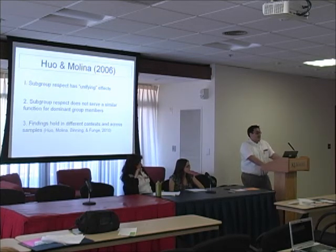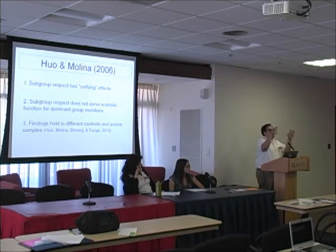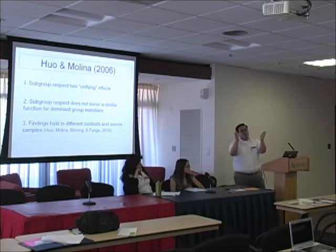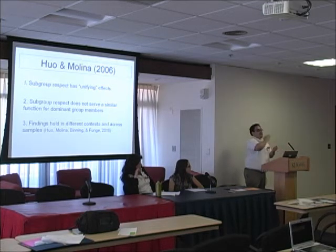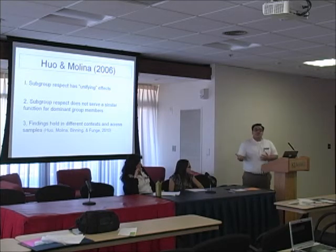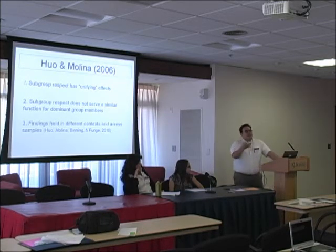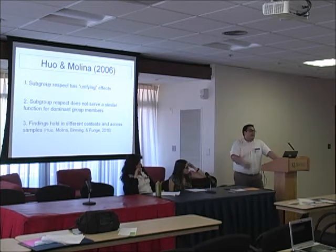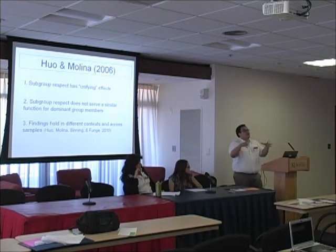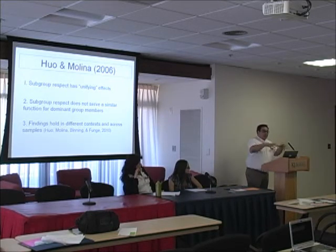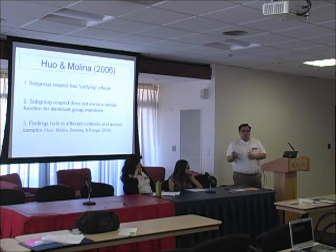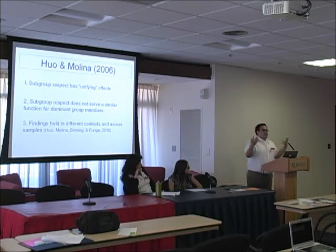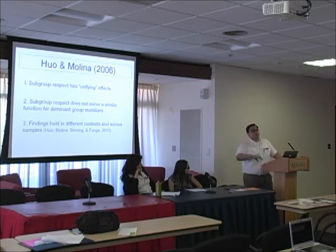We also carried this out in diverse school settings. Instead of looking at the large national group of America, the superordinate group is the school itself — an ethnically and racially diverse school. The subgroup is still racial identification. What ends up happening is that when students perceive that principals and others in the school actually respect their ethnic and racial group, the more they identify with that school, and the less animosity they have toward groups outside their own ethnic or racial group.